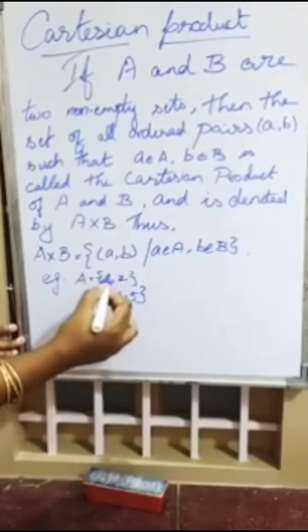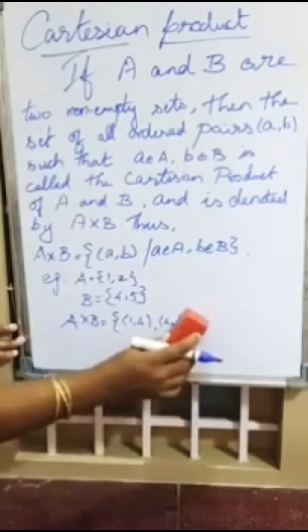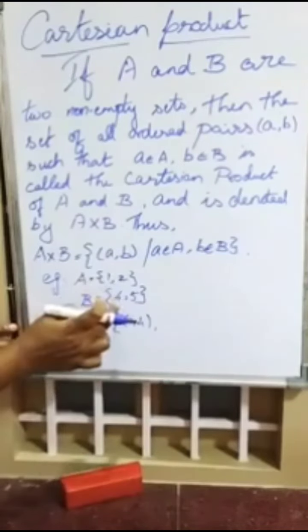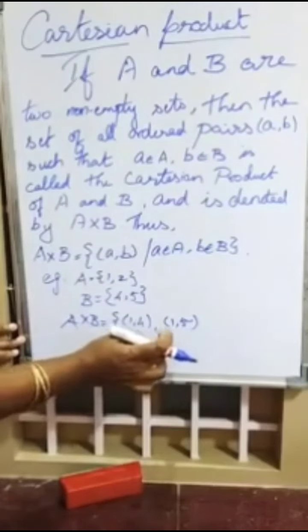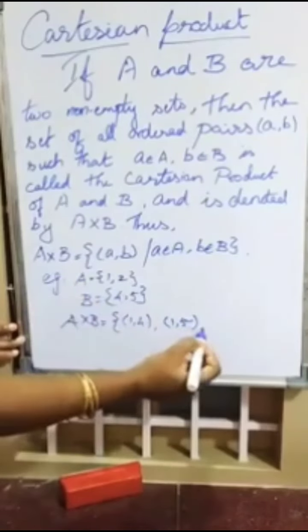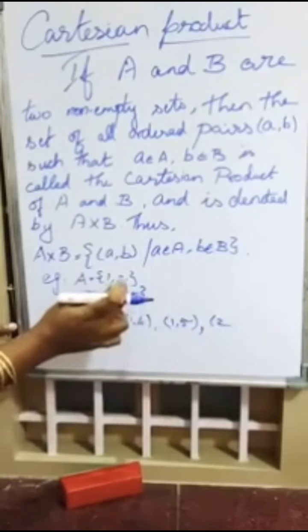Therefore, take the first element, 1: we get 1 comma 4 and 1 comma 5. That is, 1 belongs to A and 4 belongs to B, then 1 belongs to A and 5 belongs to B. Next, we take the second element from the A set, that is 2: we get 2 comma 4, and 2 comma 5.